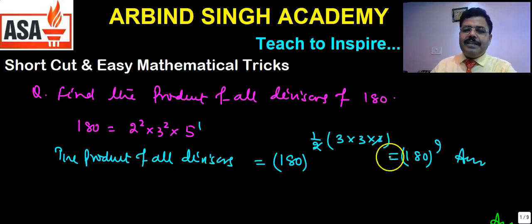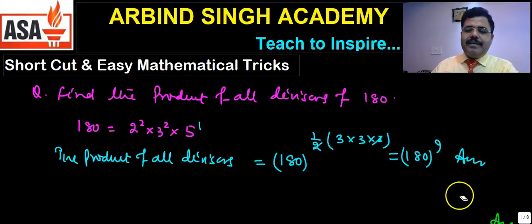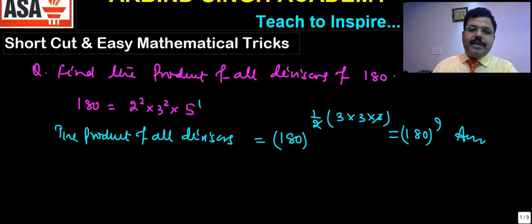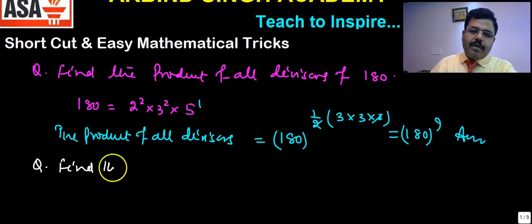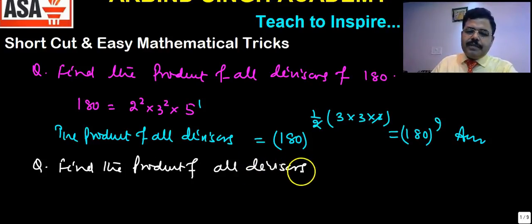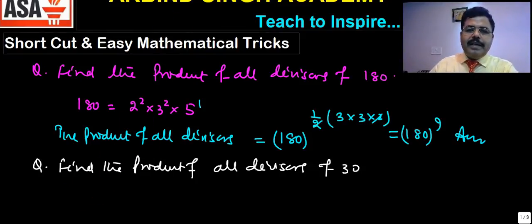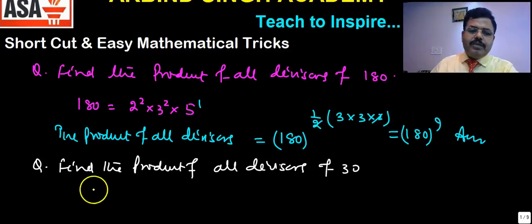You can check this formula for a smaller number. Let me write another example. Question: Find the product of all divisors of 30. 30 can be written as 2 × 3 × 5.